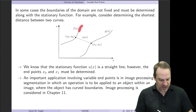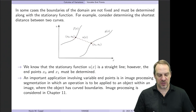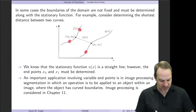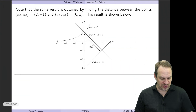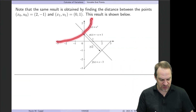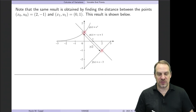Variable endpoint conditions lead to what are called transversality conditions. For example, given curved boundaries, we want to find the starting and ending points along those curves that minimize the path length. Depending on where we start and end, we get different lengths, and we choose the points that give the minimum. There's also an example with one curved and one straight boundary, where the shortest distance is a straight line, but we must find the optimal start and end points using this approach.